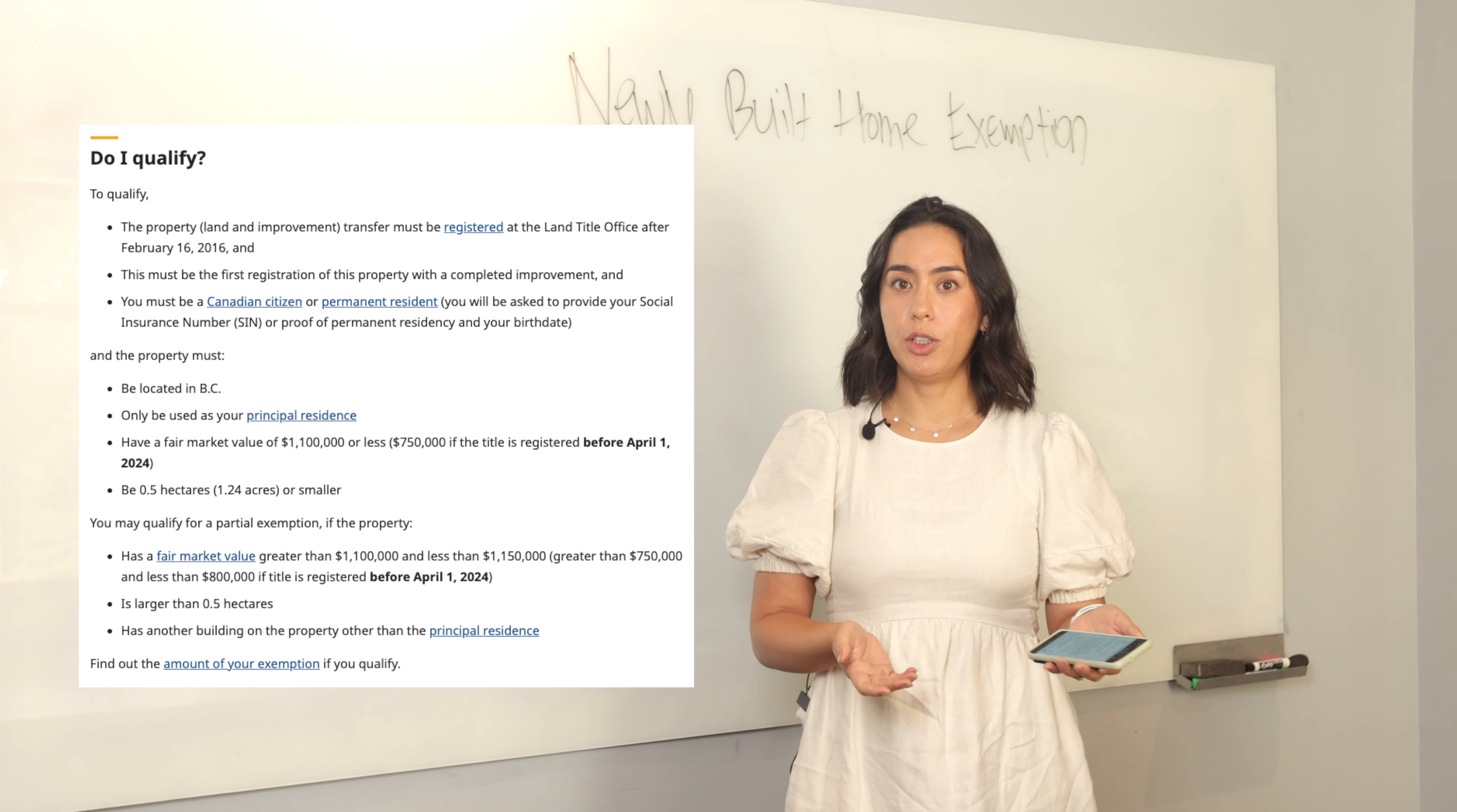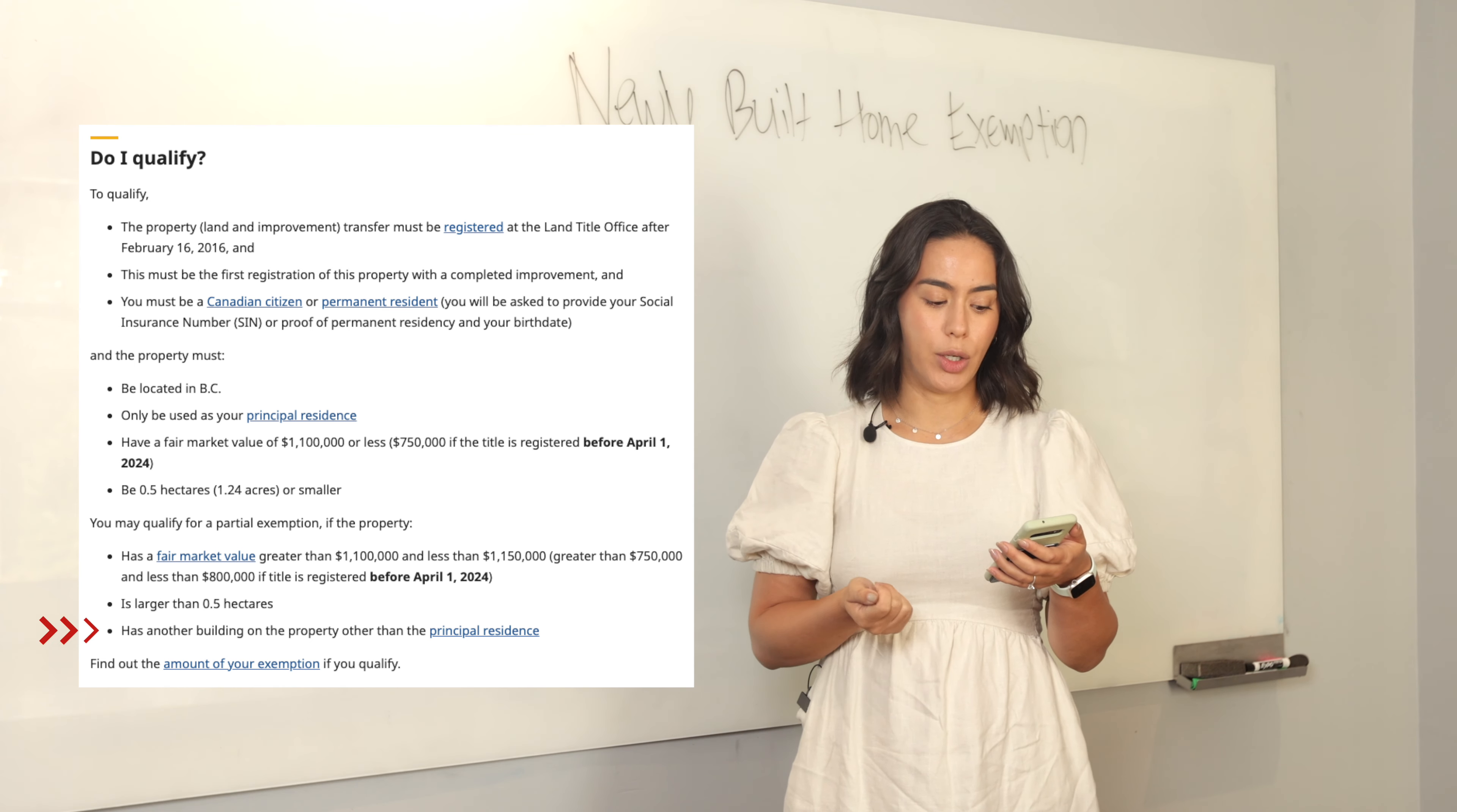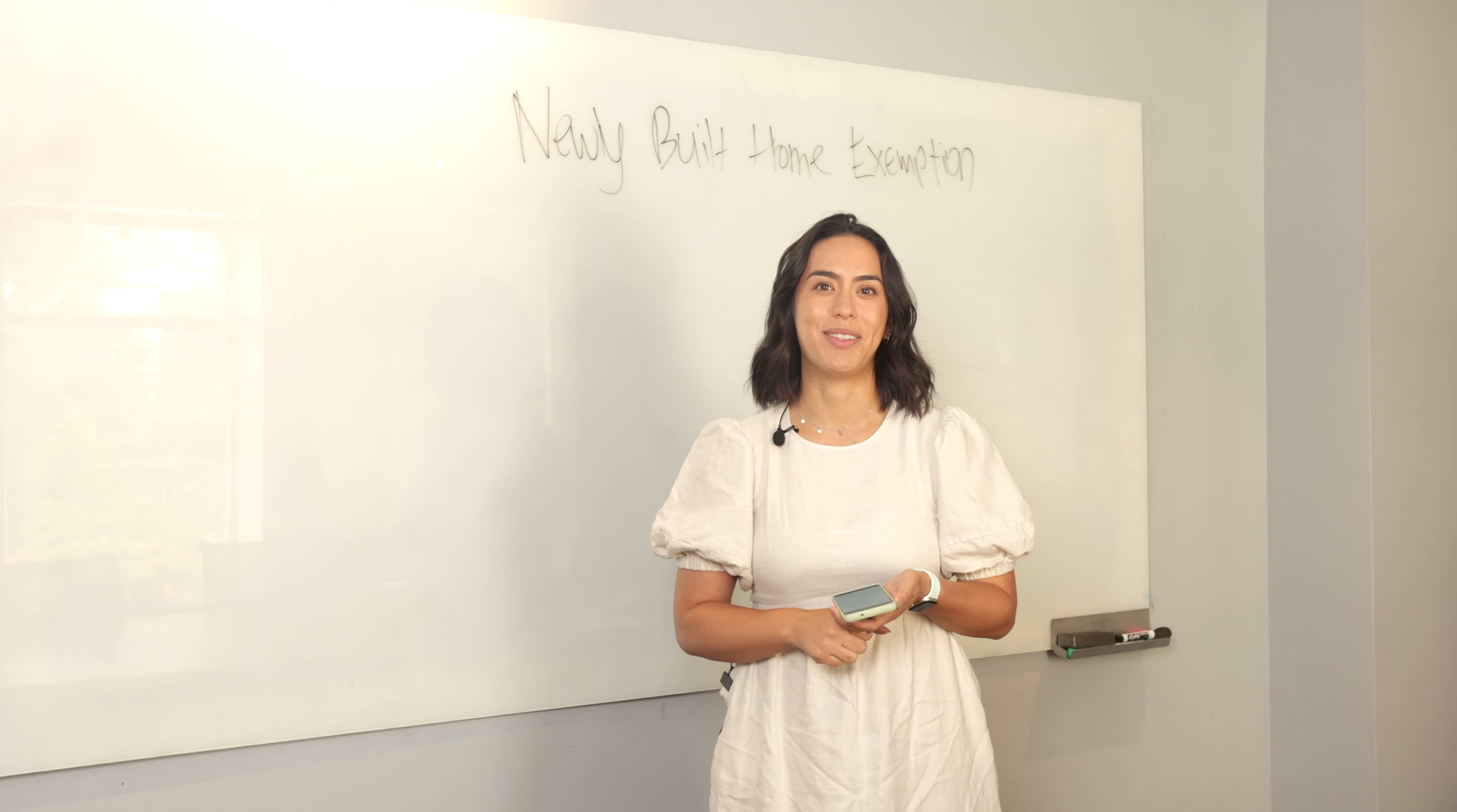In this situation, it has to have a fair market value of $1.1 million or less in order to get the full exemption. This was previously $750,000 but has been increased to $1.1 million. The property has to be 0.5 hectares or 1.24 acres, depending on how you calculate it, or smaller. There are also partial exemptions for the newly built home exemption, in which case it could have a fair market value greater than $1.1 million but less than $1.15 million. Definitely make sure to check out the government website to check if you qualify, or talk to your lawyer who's going to be dealing with the transfer.